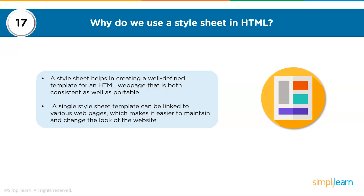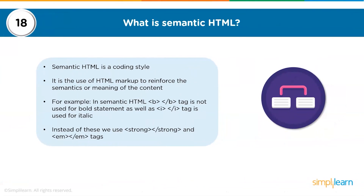The eighteenth question: what is semantic HTML? Semantic HTML is a coding style — it is the use of HTML markup to reinforce the semantics or meaning of the content. For example, the b tag is not used for bold statements, and the i tag is not used for italic. Instead, we use the strong and em tags.